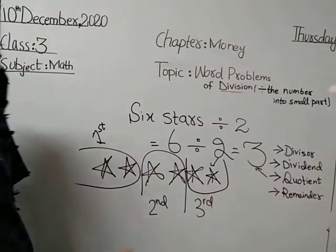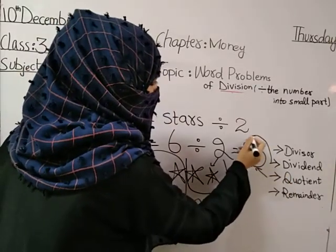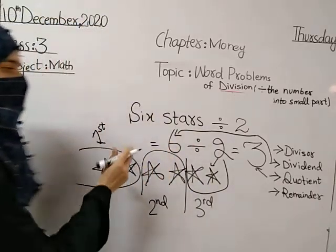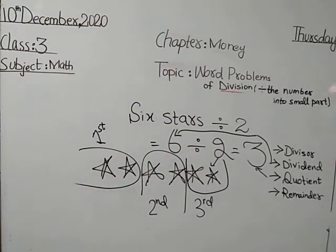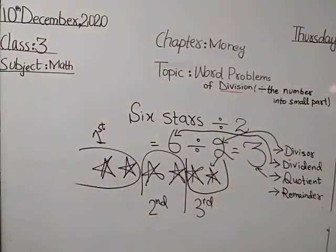Total parts three is the quotient. Dividend is six, the total number we have divided. Divisor is the number we divide by, dividend is the number which we divide, and remainder is what's left after division.